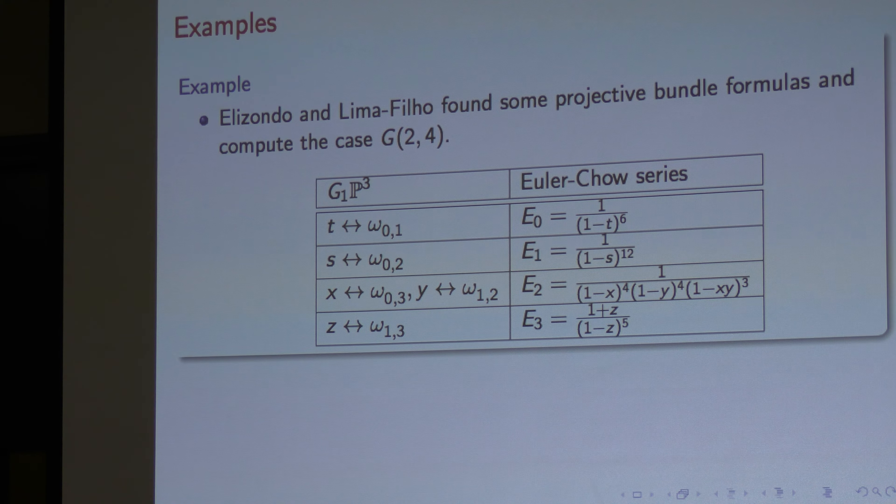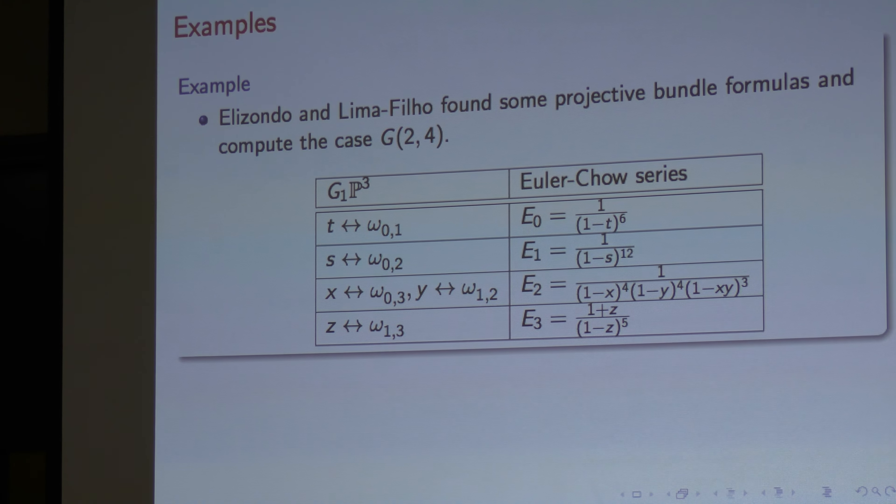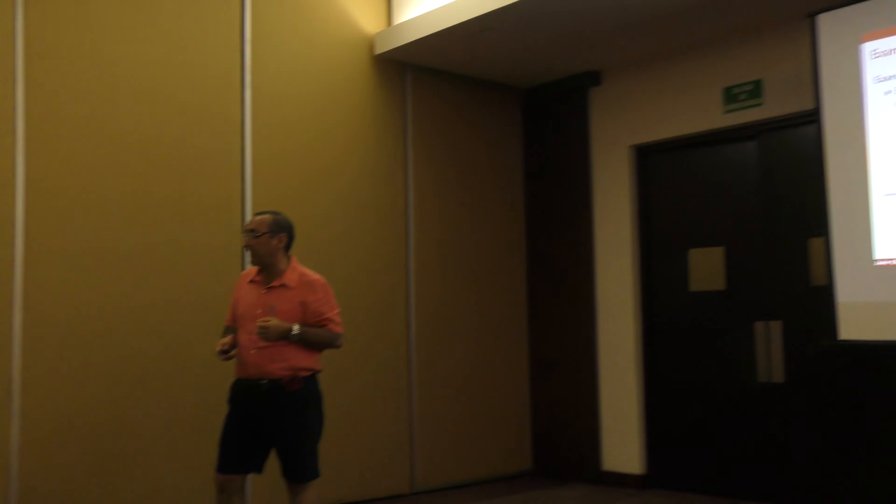The problem to try to compute for flag varieties, even for torus magnets in general is, we have to understand the series for the blow-up of PN cross PN along the diagonal. And we don't know how we can have to do that.